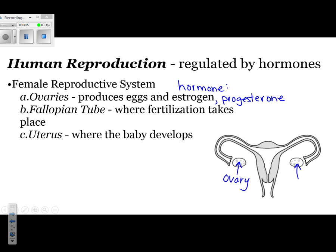Next we have the fallopian tubes. The fallopian tubes are where fertilization takes place. Fertilization is when sperm and egg meet and form a fertilized egg, which is referred to as a zygote. Fertilization happens inside these tubes.